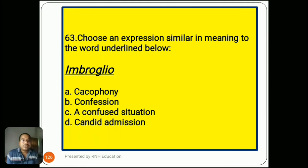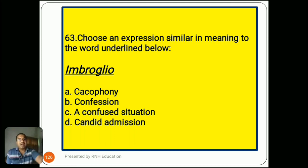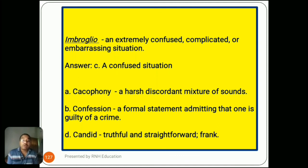Question number 63: 'Choose an expression similar in meaning — imbroglio.' Options are A) cacophony, B) confession, C) a confused situation, D) candid admission. Imbroglio means an extremely confused, complicated, or embarrassing situation. The right answer is C) a confused situation. Option A, cacophony, means a harsh, discordant mixture of sound. Option B, confession, means a formal statement admitting one is guilty of a crime. Option D, candid, means truthful and straightforward or frank.